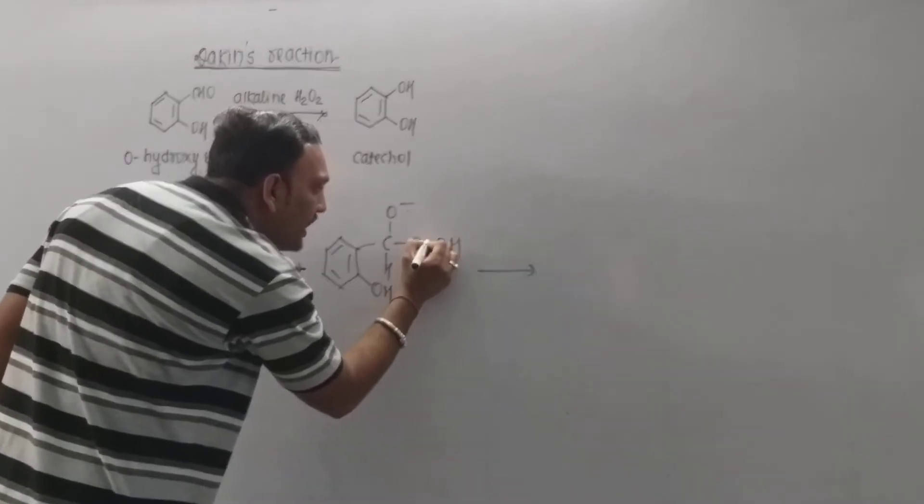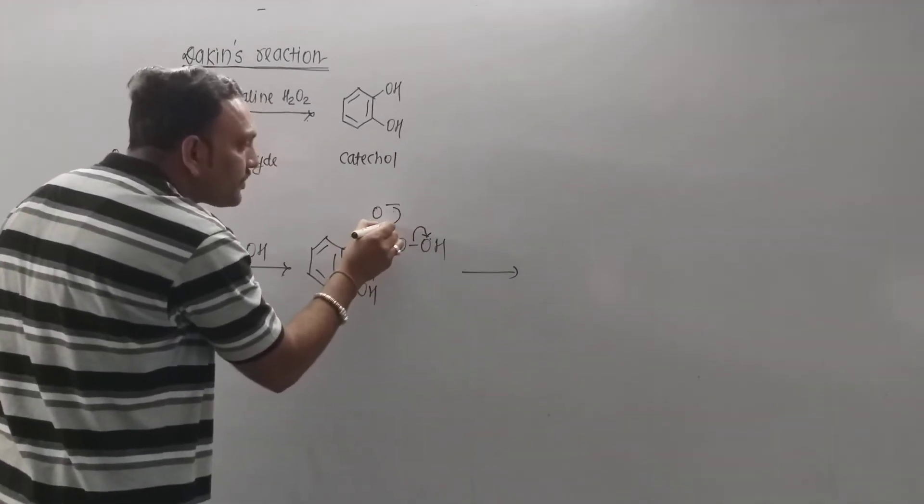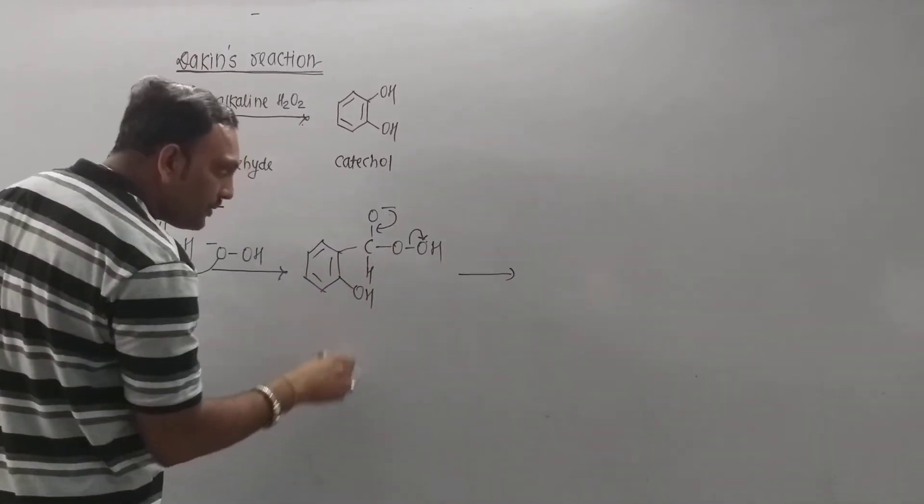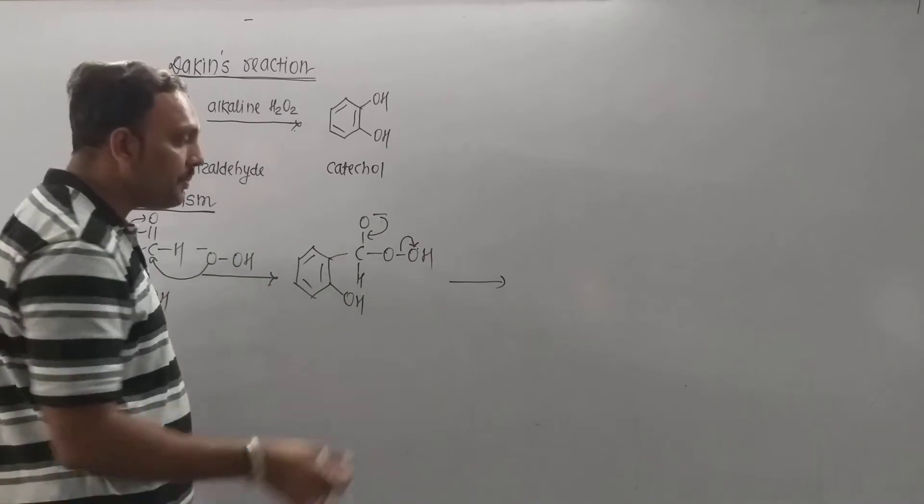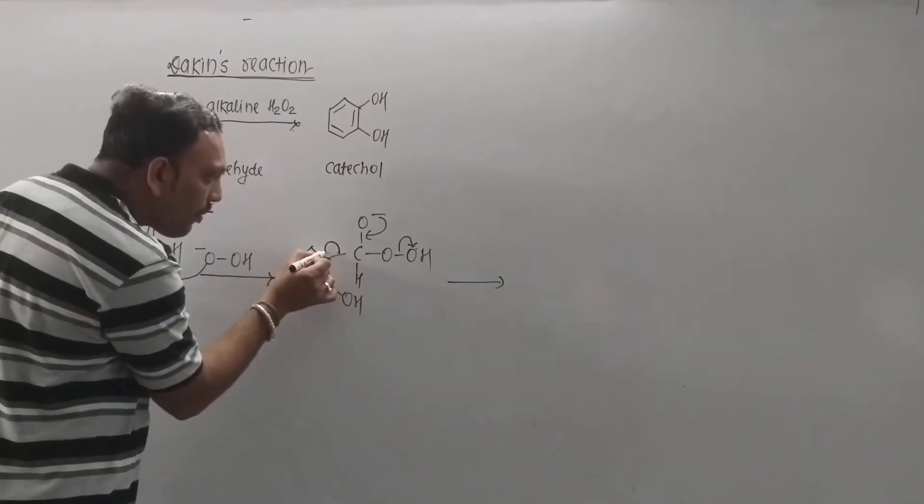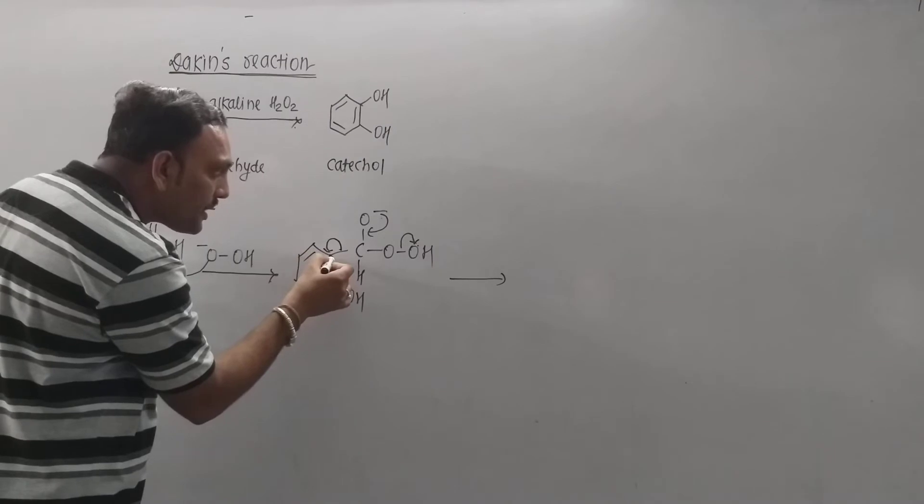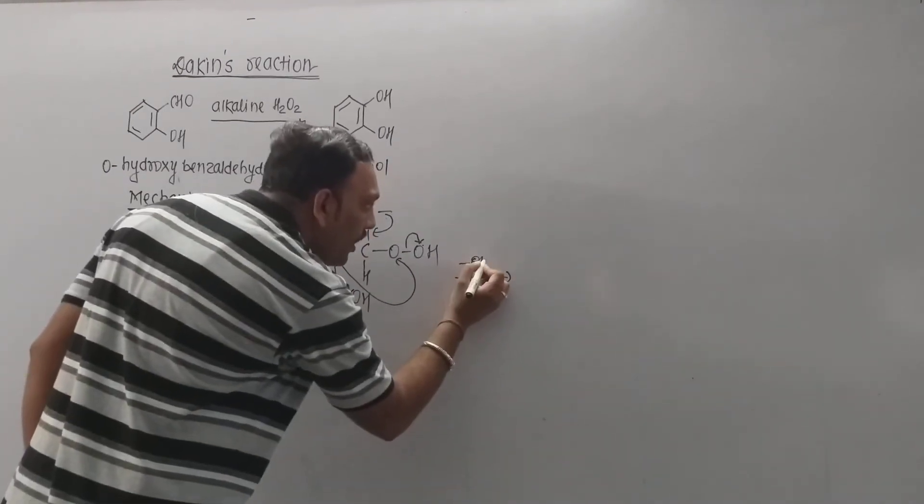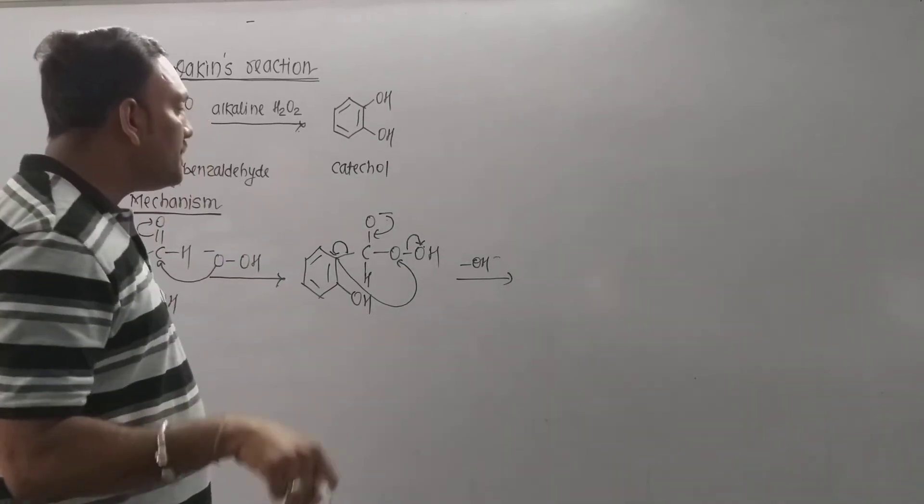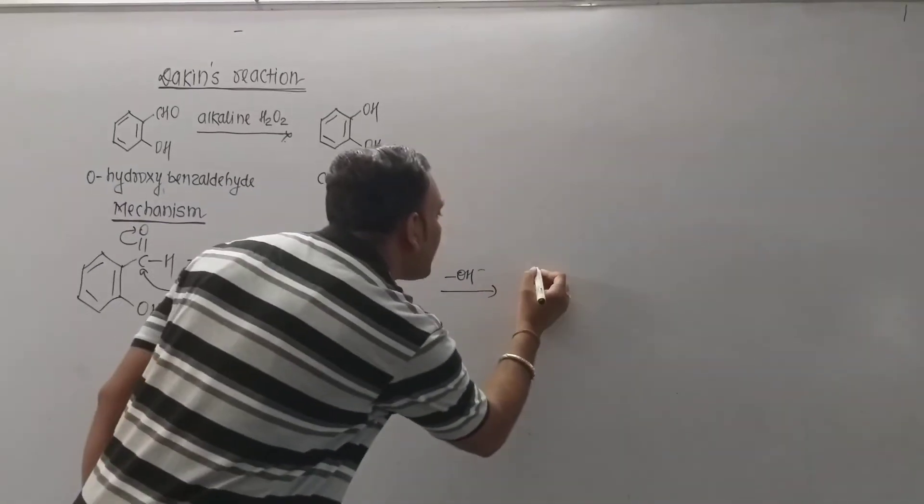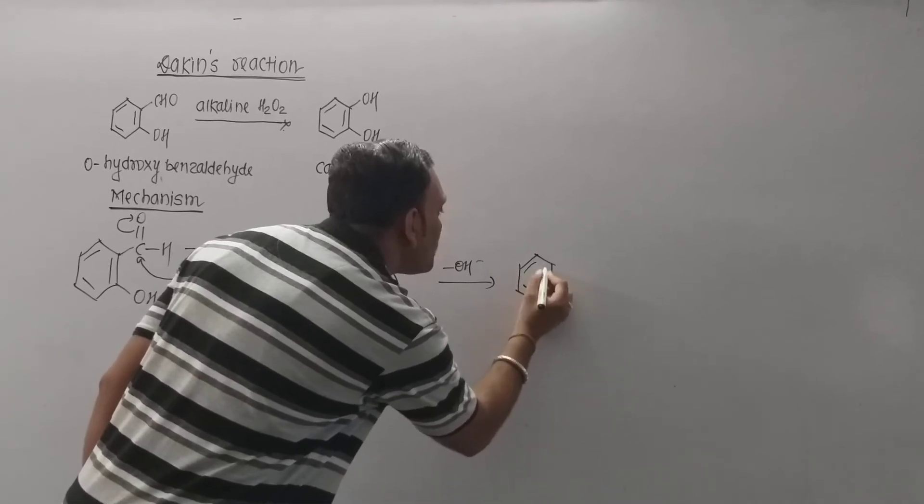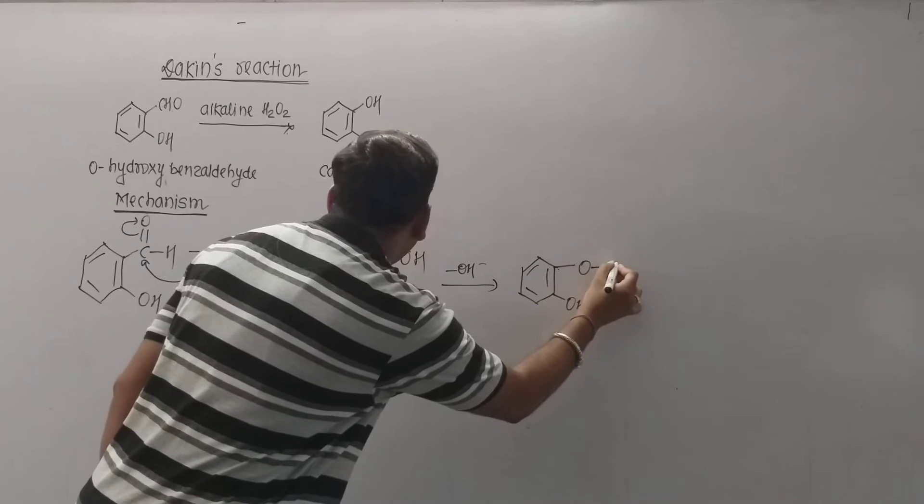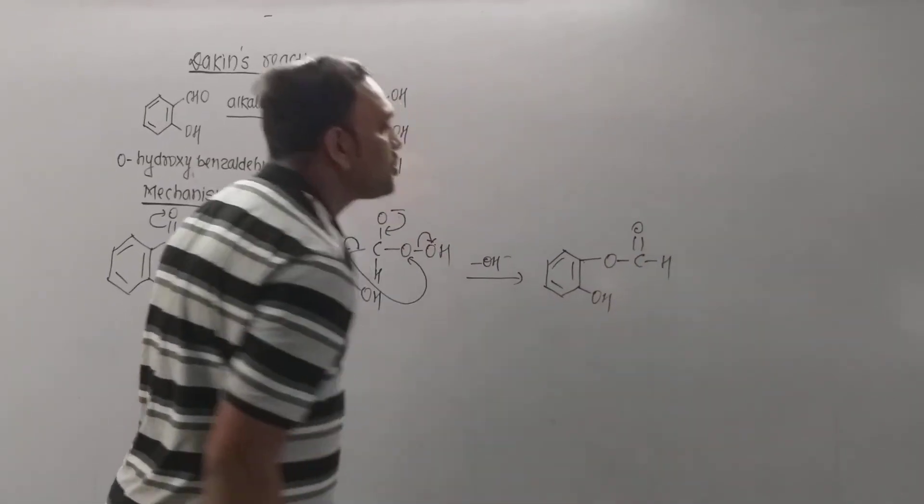Now at this point, hydroxide ion, I mean OH-negative ion, ultimately gets departed. Due to which this oxygen becomes electron deficient, and at this point, ultimate rearrangement takes place as well. So one can mention the newly formed intermediate so obtained can be written as... This is the intermediate so obtained.